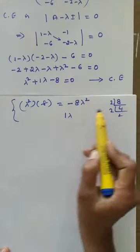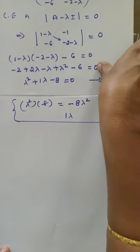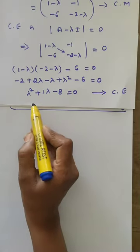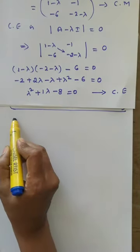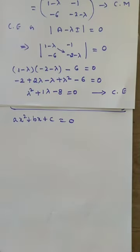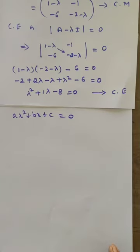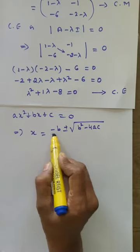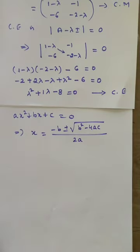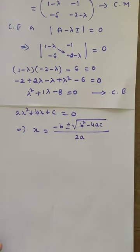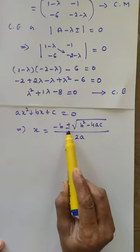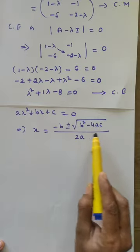Factorization cannot be applied to this equation lambda squared plus lambda minus 8 equals zero. If it is not possible to factorize a quadratic equation A x squared plus B x plus C equals zero, there is a formula to find the roots: x equals minus b plus or minus square root of b squared minus 4ac, divided by 2a.